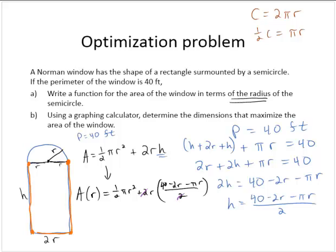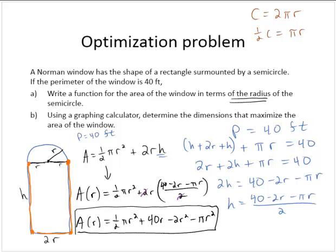Distributing the r, the area as a function of r is ½πr² plus 40r minus 2r² minus πr². So there's my area as a function of r.